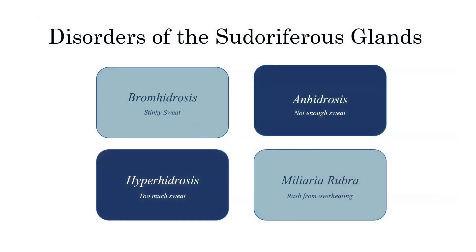Let's talk about the four pseudoriferous gland disorders that will appear on a state exam. First, bromhidrosis — this is stinky sweat. Think B-O, bromhidrosis. If you work out and get really stinky, you probably have some form of bromhidrosis. Anhidrosis means you don't sweat enough, which is a problem because you could seriously overheat if your body isn't releasing perspiration like it needs to.